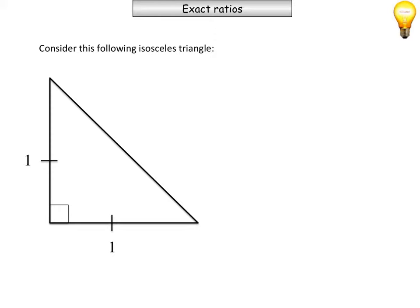Let's just consider this following isosceles triangle. I've made it have two side lengths equal to 1. I could have both of them 2 or 3, but just for making it a little bit easier, let's just call each side length 1. So if I had an isosceles right angle triangle, what would be the other two angles?